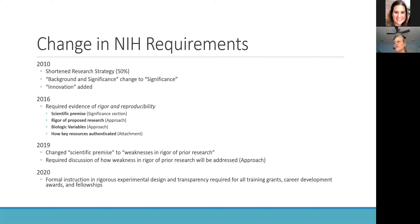In 2016, after those two landmark studies by Amgen and Bayer, the NIH got together and said they needed to enhance rigor and reproducibility in the grants coming to them, so they required PIs to start including evidence of rigor and reproducibility in their grant. They changed the scientific premise section to be called the significance section, required rigor of the proposed research to be described in the research approach, introduced the idea of key biologic variables to be addressed in the approach, and wanted PIs to demonstrate they needed to authenticate key biologic and chemical resources. Fortunately, that last point was an additional attachment, so we didn't have to fit all of this into our 12 pages for R01s and six pages for R03s.